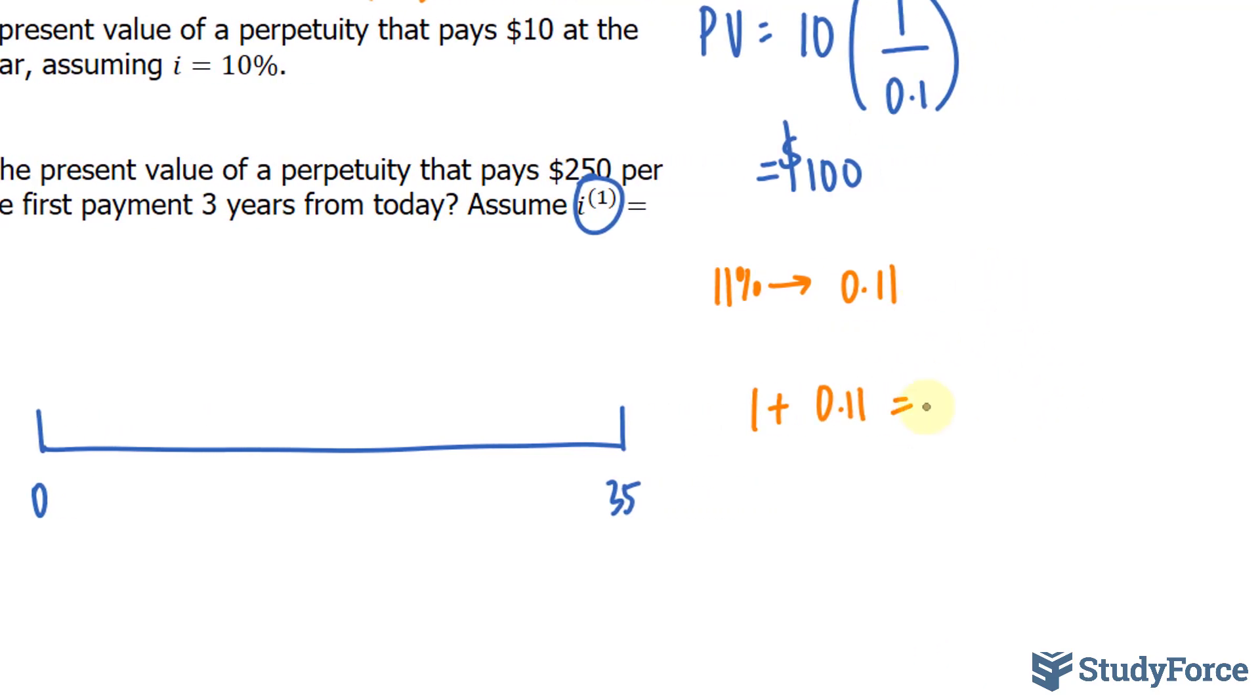And that equals 2. If we want this to be monthly, we write down 1 plus the new interest that we're looking for, we'll represent it as i, and because it's monthly, we divide it by 12 and we raise it to the power of 12. And all we have to do now is solve for i for our new interest.